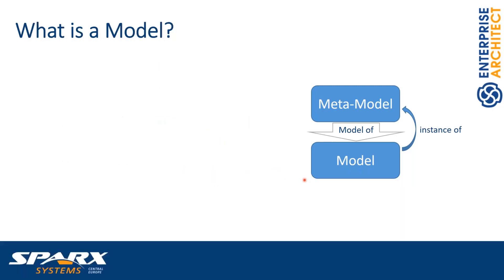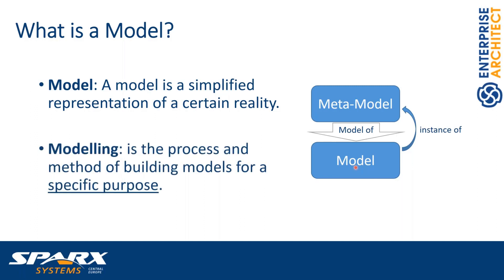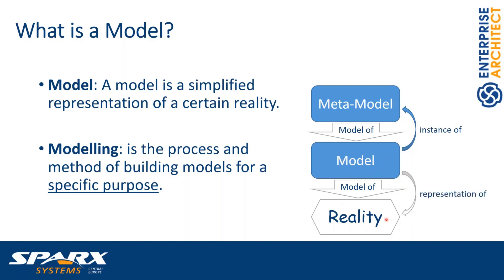What is a model? A model is a simplified representation of a certain reality, and modeling is the process and methods of building models for a specific purpose. The model represents the reality but the reality is not really an instance of the model, like the model is an instance of the metamodel. Whatever is above a given level is the metamodel, and whatever is below is an instance — it just depends on the point of view.